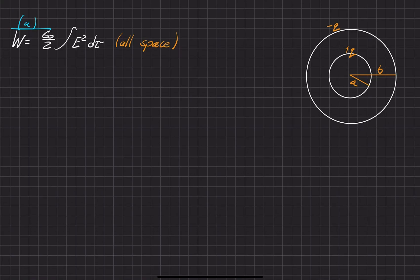In the first part of the problem, we're trying to figure out what the energy stored in this system is for two concentric spherical shells, one of them with a radius of A that has a total charge of positive Q, and then another one with a radius of B with a total charge of negative Q.